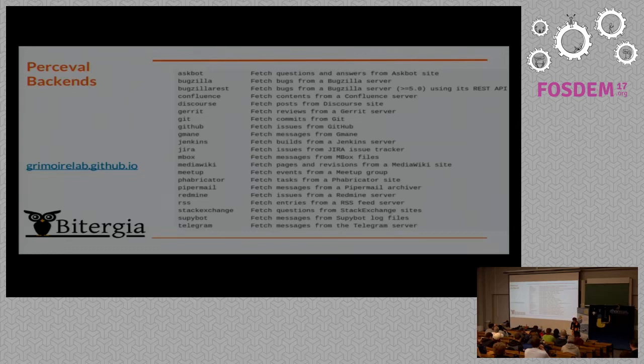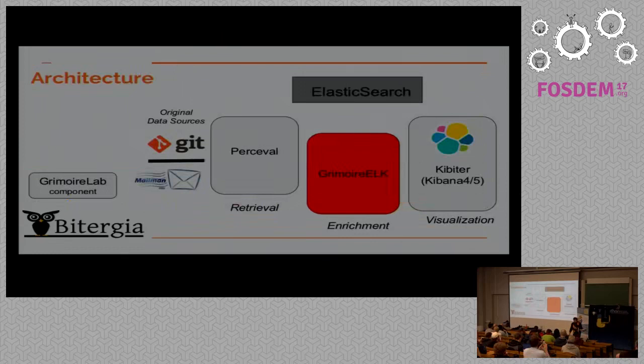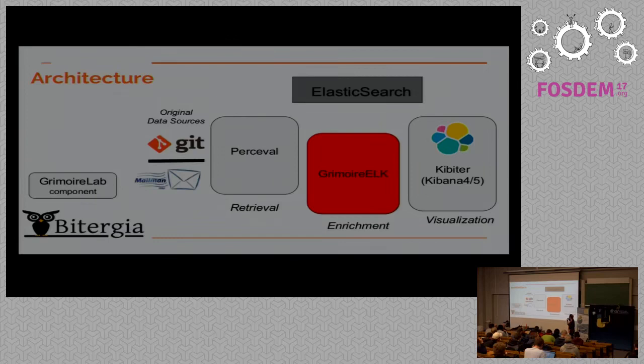The next component is Grimoire ELK. As I said, Grimoire ELK takes charge of storing information in Elasticsearch and can also run Perceval to get information. Remember that Perceval produces Python dictionaries. Grimoire ELK can run Perceval, get those Python dictionaries, upload them as raw indexes to Elasticsearch, and then use the same information to produce enriched indexes. That means Grimoire ELK can produce dashboards because the information stored there is what Kibana uses to visualize.